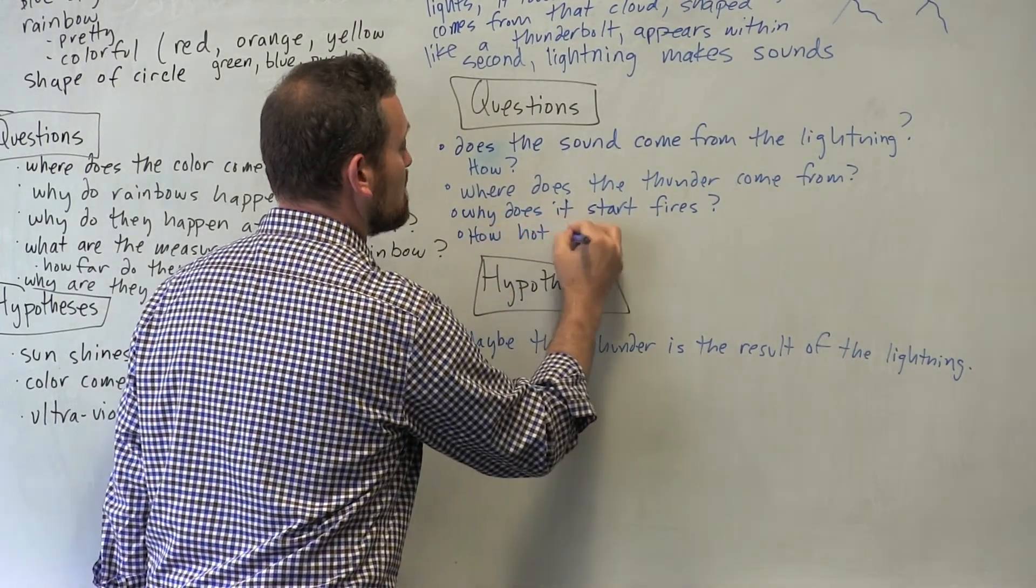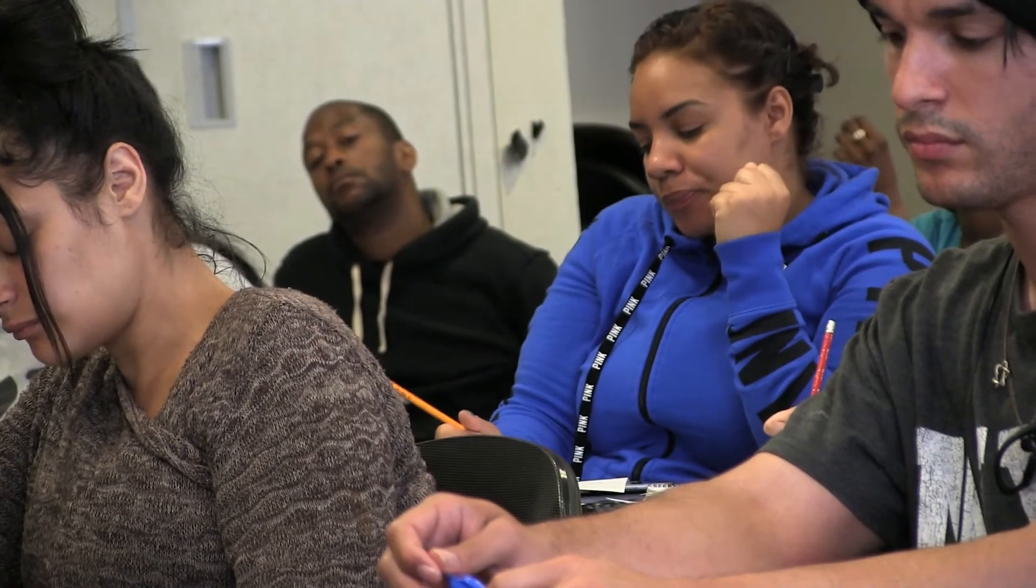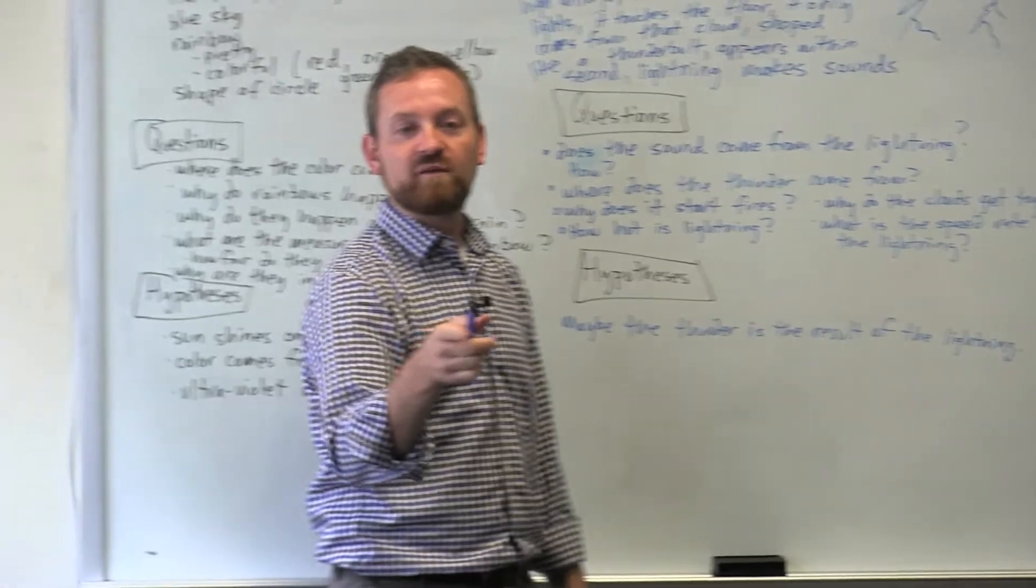So they came up with a lot of the interesting observations about lightning. They talked about how fast it was, they talked about the light and the sound, the shape of the lightning bolt they talked about. And then there are questions about why it forms, why it happens, where the noise comes from. So the basic question was, why does lightning happen? And that was a way in to talk about electrical charge.